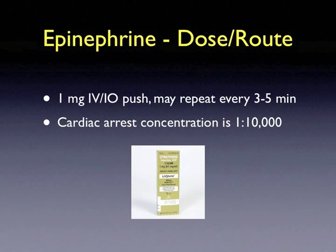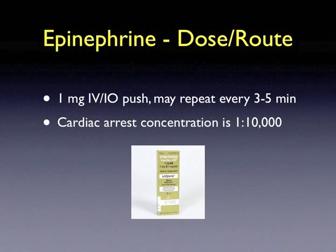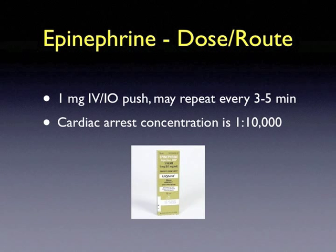The dosing and route of administration in cardiac arrest management is 1 milligram intravenous or intraosseous push. This dose may be repeated every 3 to 5 minutes. Recall that the cardiac arrest concentration is 1 to 10,000. A picture of the box for your reference is printed here.